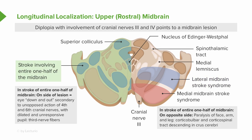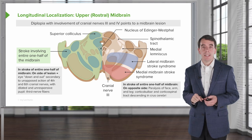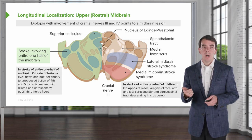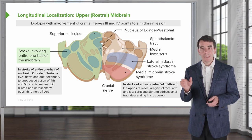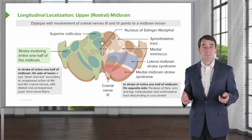If one entire side of the midbrain is involved, we see crossed findings. On the side of the lesion, the eye is down and out — there's a cranial nerve three palsy secondary to unopposed action of the fourth and sixth nerves when cranial nerve three isn't working. Cranial nerve three also controls the parasympathetics, so that affected eye will be dilated and unresponsive. On the opposite side of the third nerve palsy, the patient will have paralysis of the face, arm, and leg as a result of dysfunction of the corticobulbar and corticospinal fibers descending in the crus cerebri. This is a critical midbrain stroke syndrome to recognize.